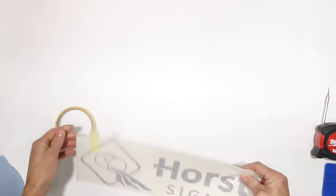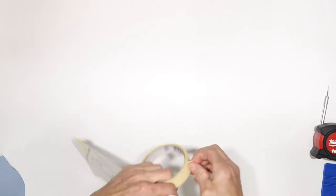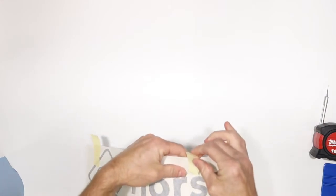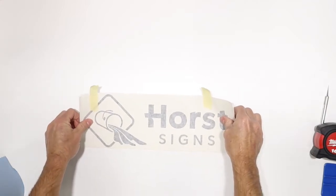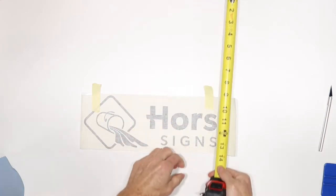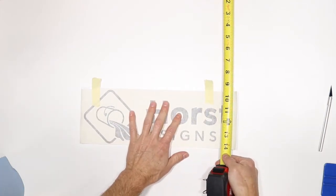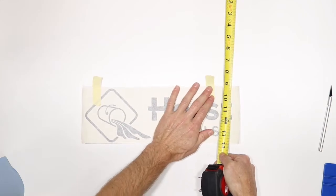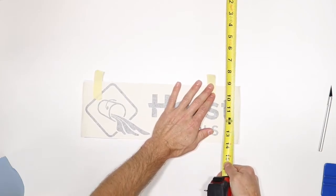Next, we will tape the decal to the surface with masking tape using two pieces as a hinge point. Visually align the decal for rough positioning. Use a tape measure to fine-tune your placement. Measure from the edge of the lettering or graphic, not the surrounding paper.